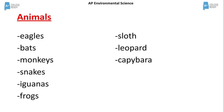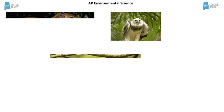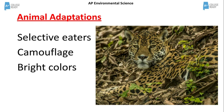The animals found in this biome include eagles, bats, monkeys, snakes, frogs, leopards, and capybaras. Animal adaptations include camouflage, being selective eaters, and being brightly colored, which usually is a protective warning sign.